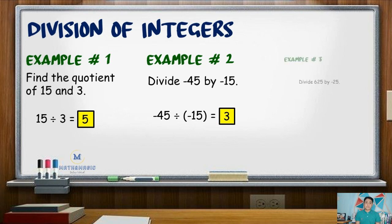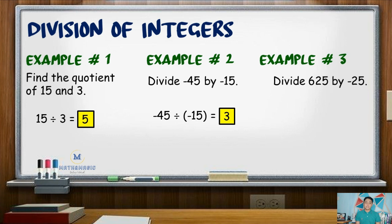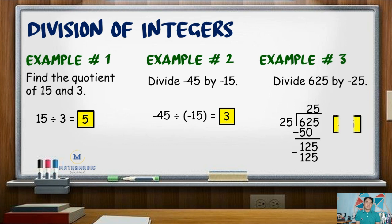For our last example, positive 625 divided by negative 25. 625 divided by 25 is 25. Since the two integers are unlike signed — one positive, one negative — the quotient is negative. Hence, the answer is negative 25.